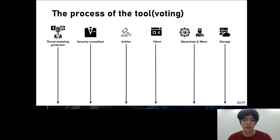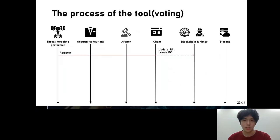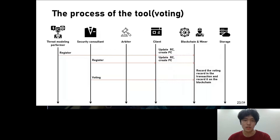Let me explain how the contract works from two perspectives. Register and voting on the left are the names of the algorithms used. The process is as follows: a stress modeling performer and security consultant register, RC is updated, and a new PC is created. Of these, only security consultants participate in the voting. Voting records are recorded on the blockchain, the PC is updated, and the arbiter is elected.